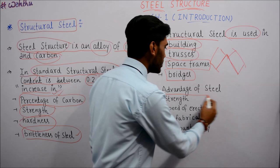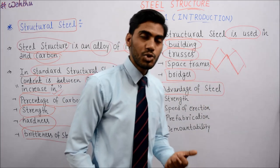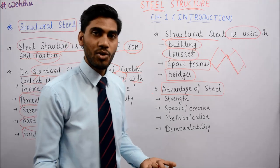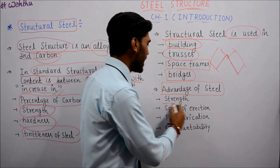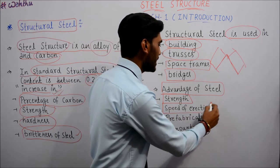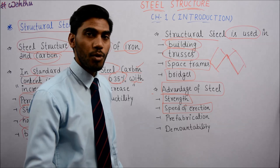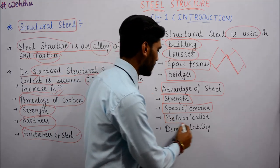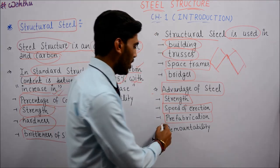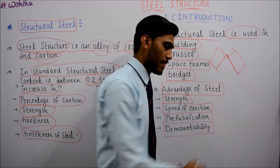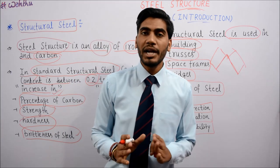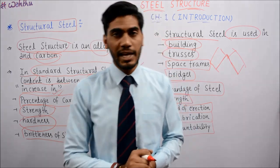Next - Advantages of Steel. Now that we have used steel, what are its advantages? Strength increases. Speed of erection - the speed of construction increases. Prefabrication - we can pre-manufacture components. And demontability. These four points are the important advantages of steel.